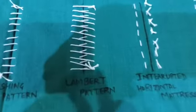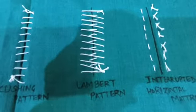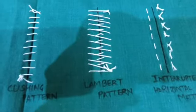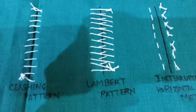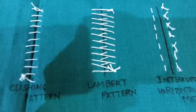The fifth one is the lambert pattern. It is also used in the inversion suture, and it is also used for the apposition of the wound of the hollow visceral organs.